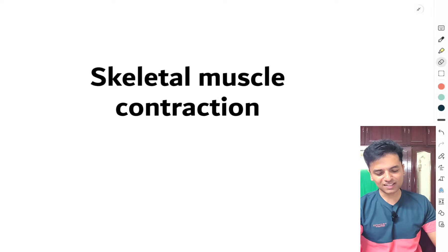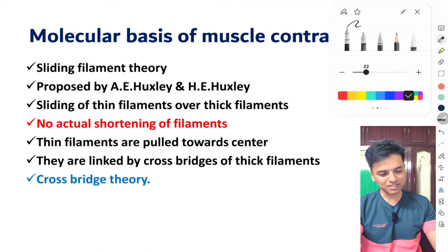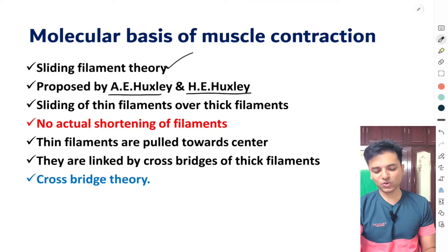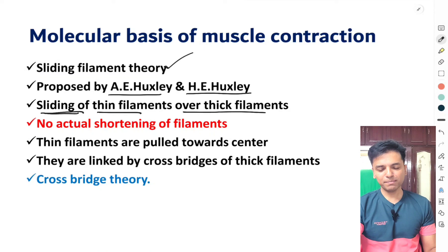The molecular basis of skeletal muscle contraction is also called the sliding filament theory, proposed by A.E. Huxley and H.E. Huxley. What is happening is that there is sliding of the thin filaments over the thick filaments. The thin filament is a combination of actin, troponin, and tropomyosin. Remember, there is no actual shortening of the filaments themselves.